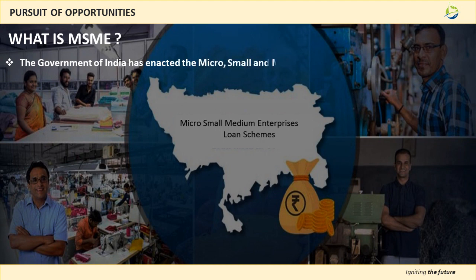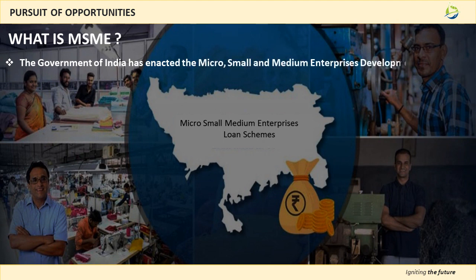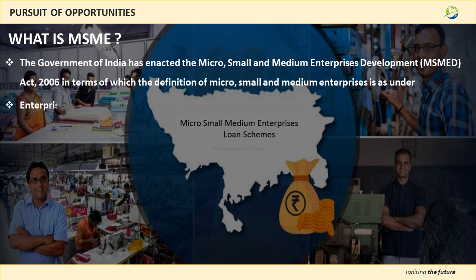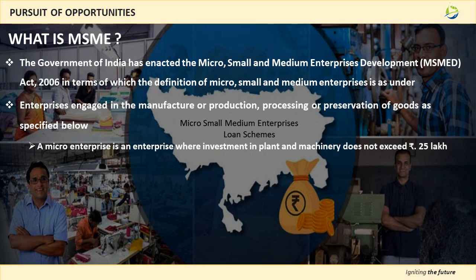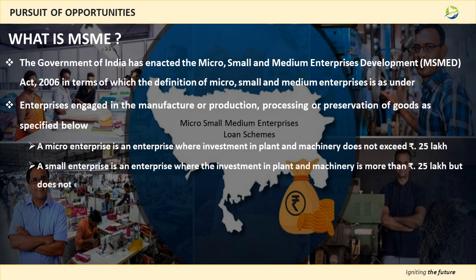Let's start with a short intro on MSME for those who don't know. MSME means Micro, Small and Medium Enterprises. In a Micro enterprise, your investment in plant and machinery should not exceed Rs 25 lakh. In a Small enterprise, your investment should be between Rs 25 lakhs to 5 crores. For a Medium enterprise, the investment should be between Rs 5 crores to 10 crores.